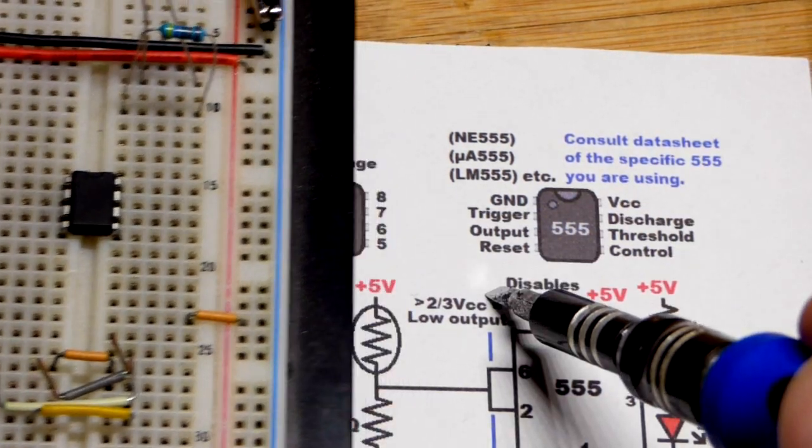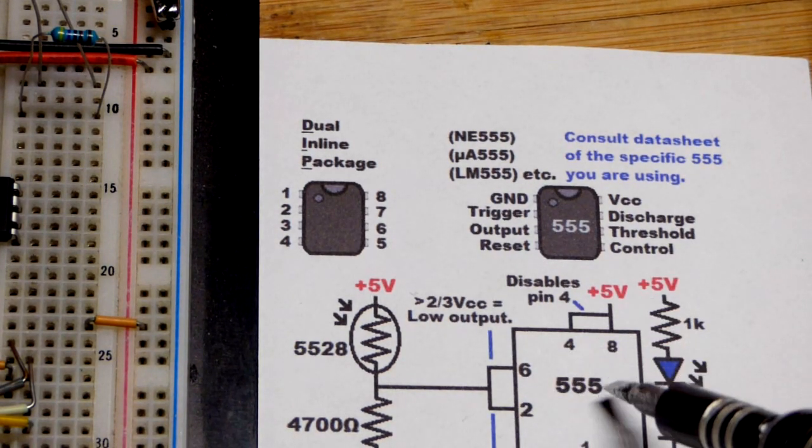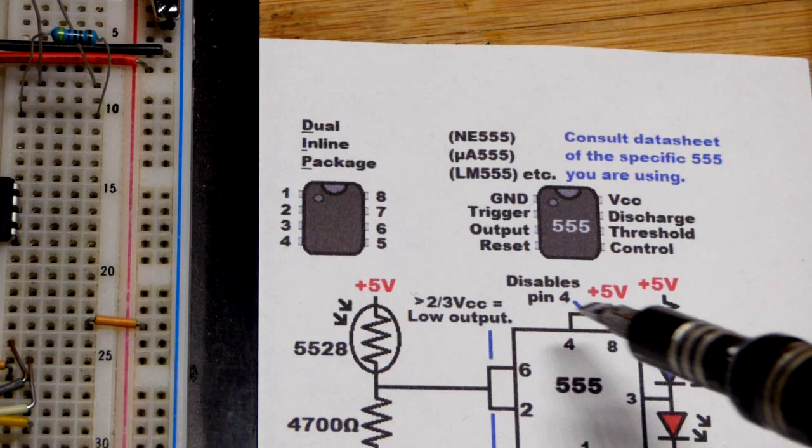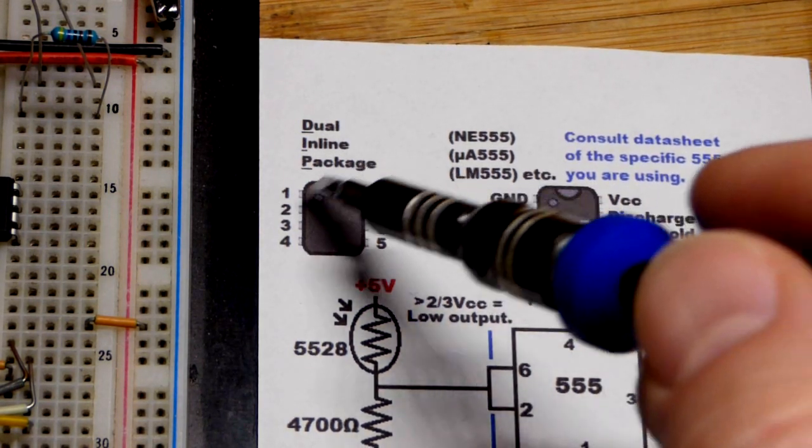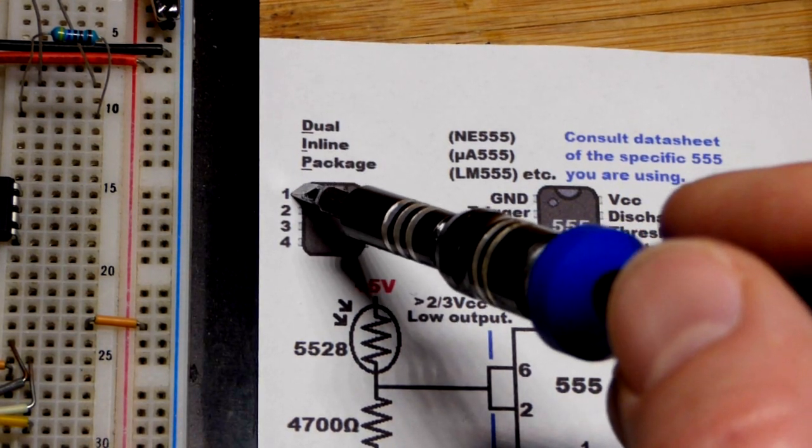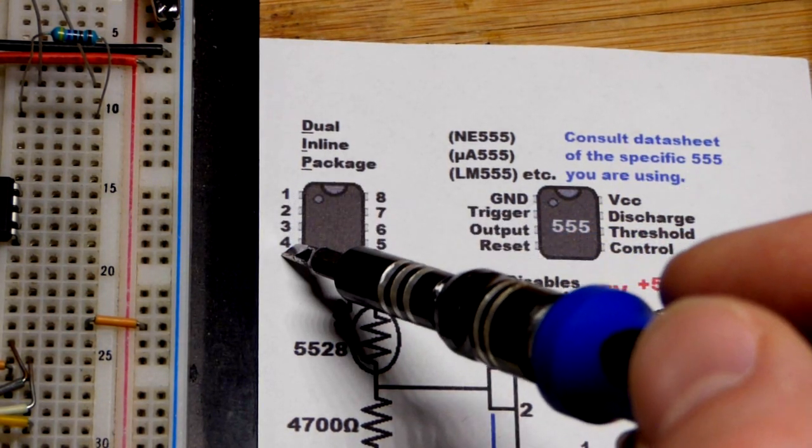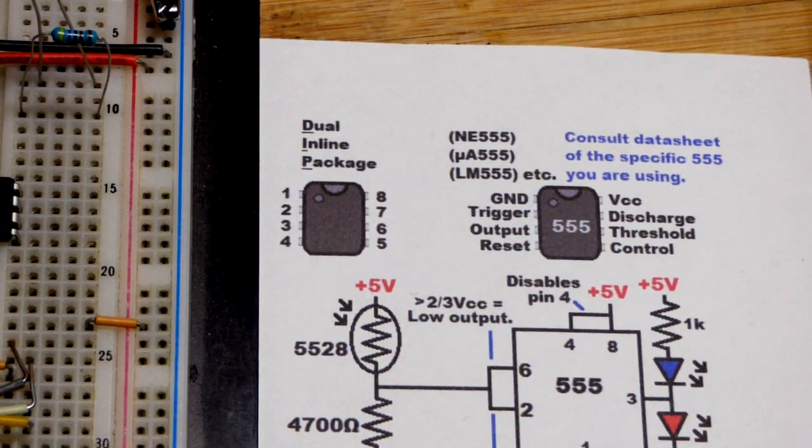We'll get to what those pins do a little bit later. But there you can see the physical component. Here is the numbering system. So we got the divot on top. Top left pin is pin one. Work your way down. When you get to the bottom, you jump across and work your way up. That's how integrated circuits are numbered.